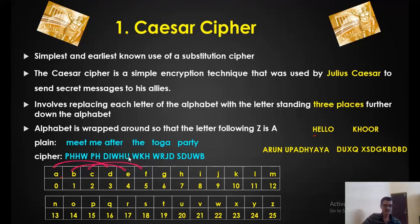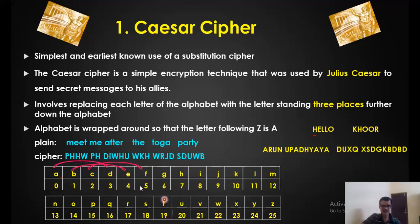When I subtract 3, I will get back the same plaintext. For example, take P: P minus 3 — P is 15, minus 3 is 12, so the corresponding plaintext letter is M. H is 7, minus 3 is 4, replaced by E. T — the corresponding number is 19, minus 3 is 16. And W is 22, minus 3 is 19, replaced by T. So I get my first word 'meet.' Just subtract 3 from the corresponding ciphertext alphabets to get back the original message.